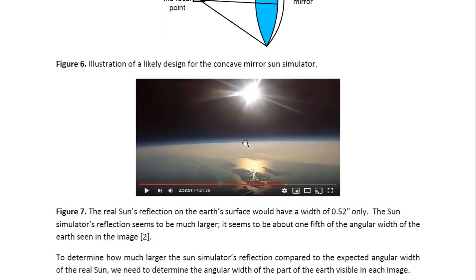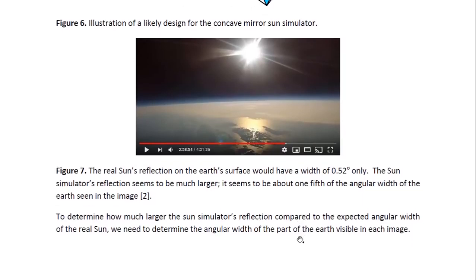And so this is the Sun Simulator's reflection off the surface of the Earth. It seems to be ocean there. So it reflects light very well. But you can see how wide this is. The real Sun's reflection on the Earth's surface would have a width of only 0.52 degrees. That's an angular width of 0.52 degrees. But the Sun Simulator's reflection seems to be much larger than that. It seems to be about one-fifth of the angular width of the Earth seen in this photograph. So about one-fifth of the total length of the image. So what we have to do is determine the Earth's angular width that is seen in that image.